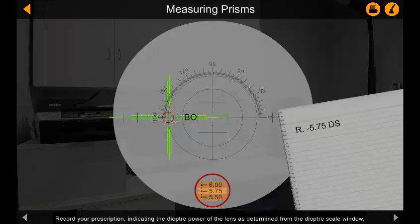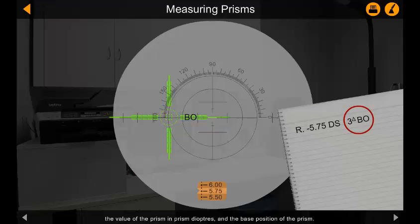Record your prescription indicating the diopter power of the lens as determined from the diopter scale window, the value of the prism in prism diopters, and the base position of the prism.